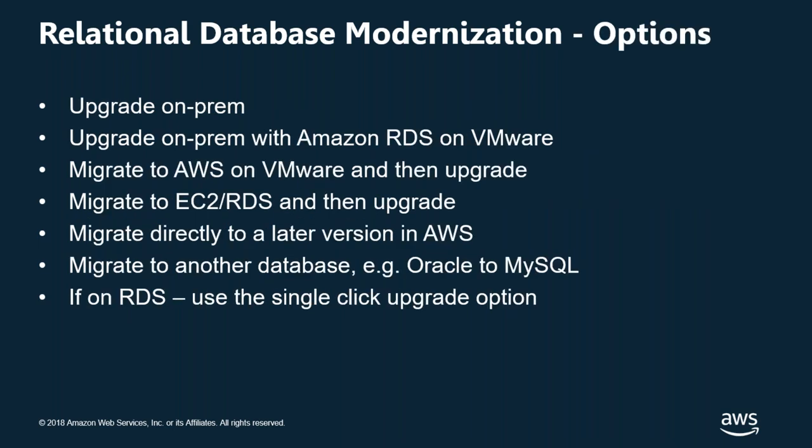Your upgrade options include: upgrade on-premises and stay on-prem; upgrade on-prem using the upcoming Amazon RDS on VMware; migrate to AWS and upgrade there on EC2 or RDS; or migrate directly to a later version in AWS. You could also migrate to a different database entirely — for example, from Oracle to MySQL — and if it's on RDS you can use the single-click upgrade option, which I'm going to show you now.